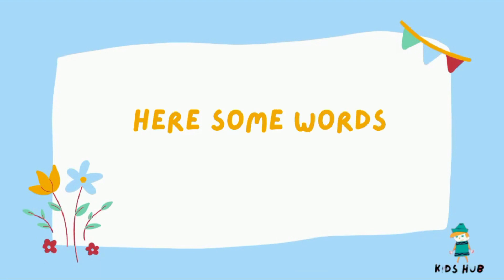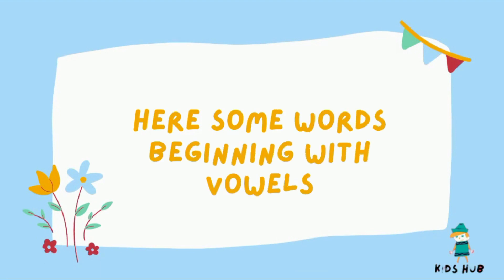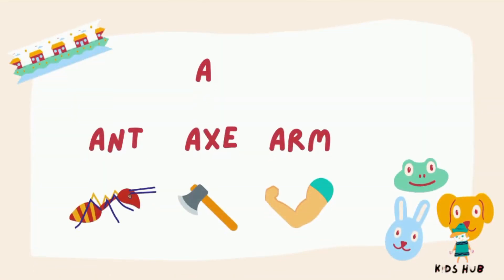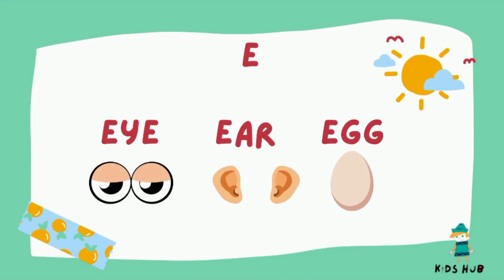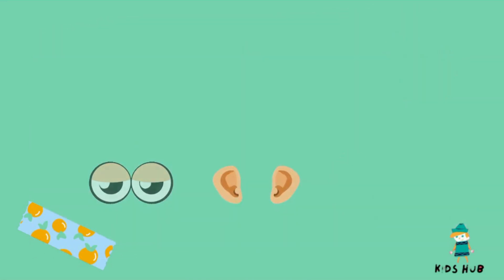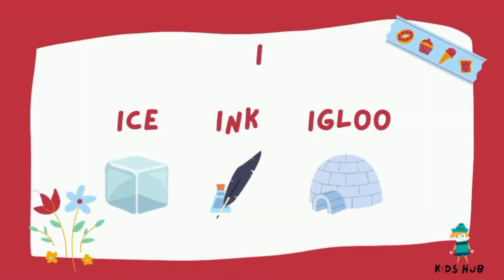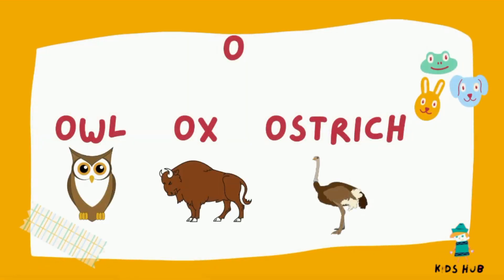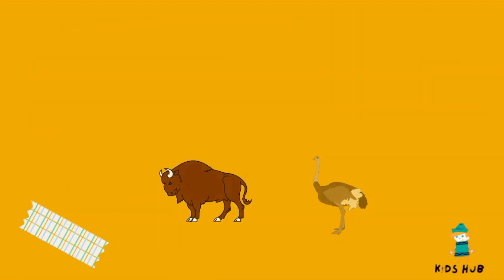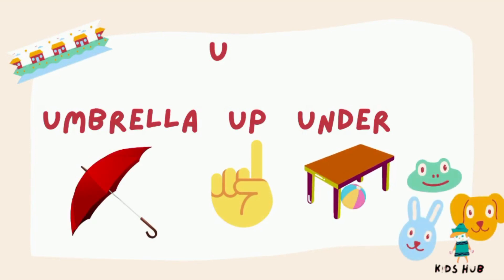Here are some words beginning with vowels. Vowel A: Arm. Vowel E: Egg. Vowel I: Ice, Ink. Vowel O: Owl, Ox, Ostrich. Vowel U: Umbrella, Up, Under.